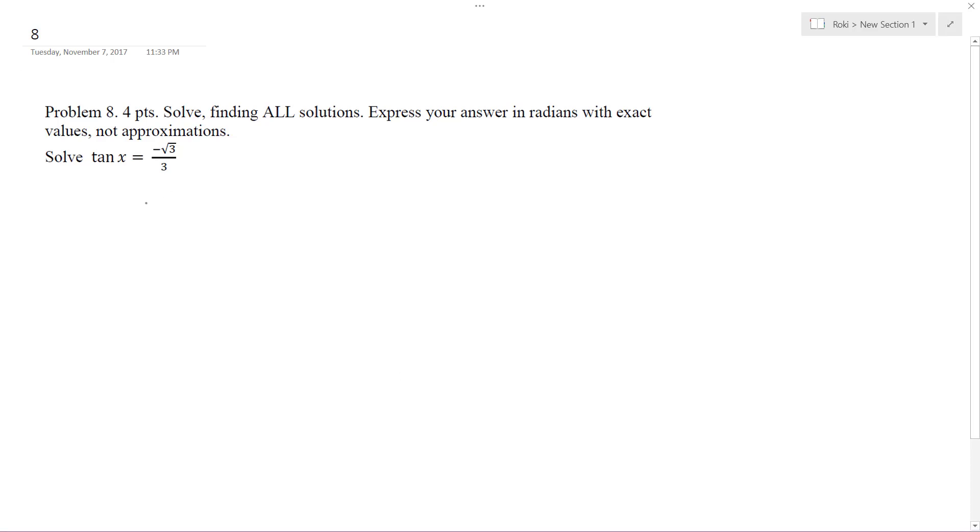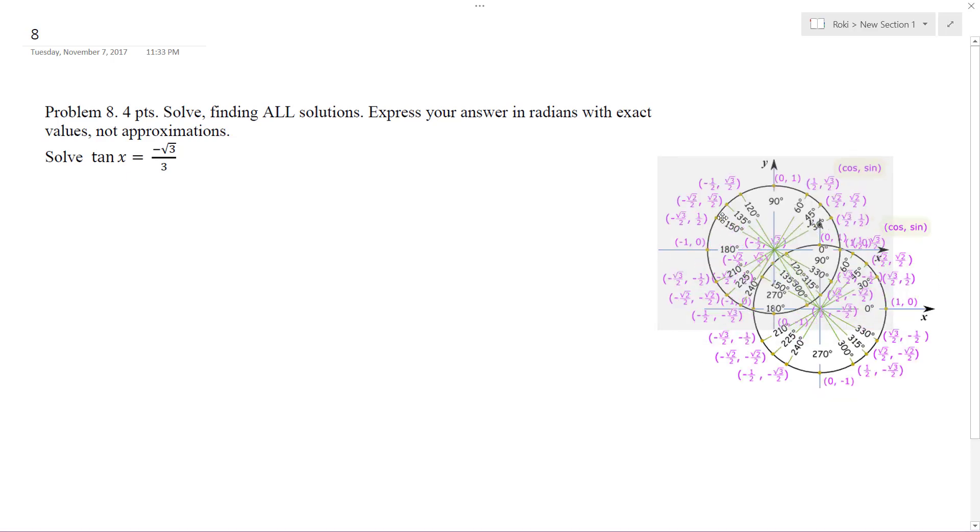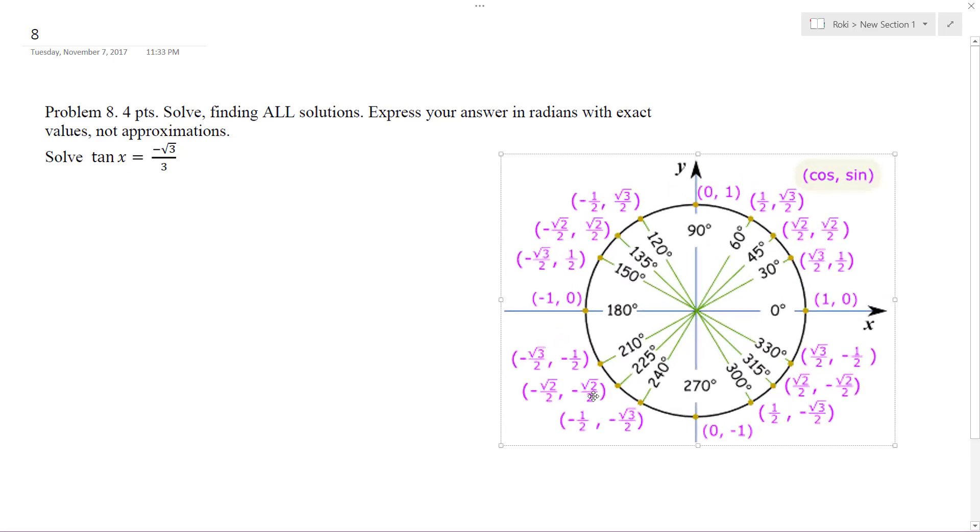All right, so we want to solve this. Let me get my unit circle out here. The tangent is negative in quadrants two and four, and the reason why is because either x or y has to be negative, and both can't be negative or positive.